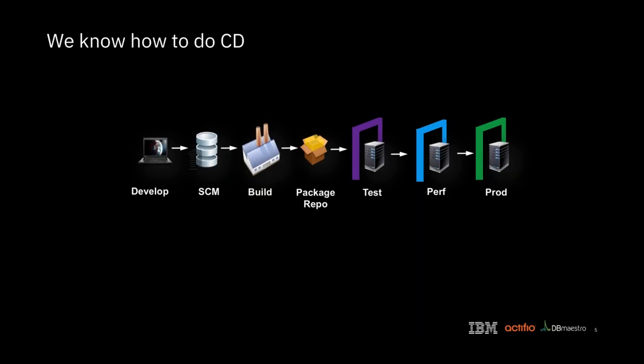The good news is we kind of know how to do continuous delivery these days. The Humble-Farley Continuous Delivery book is about 8 to 10 years old now. We've had tools in this space since 2005. This basic build pipeline construct is pretty familiar: a developer writes some code, it goes into a source control tool, it gets built, stored somewhere safe, and then deployed out to some sequence of test environments, and finally delivered into production.